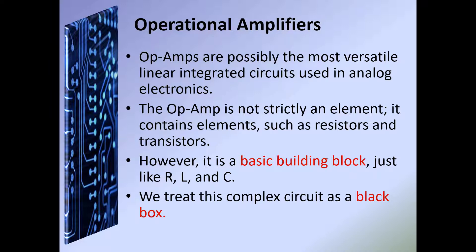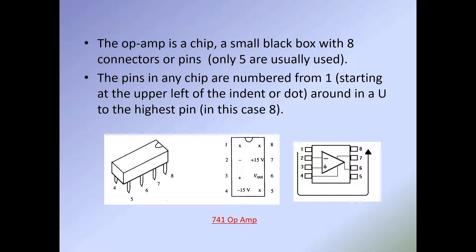Op amps are possibly the most versatile linear integrated circuits used in analog electronics. The op amp is not strictly an element — it contains elements such as resistors and transistors — but it is a basic building block, just like a resistor, inductor, or capacitor. We treat this complex circuit as a black box. The op amp is a chip, a small black box with eight connectors or pins, of which usually only five are used, and we'll talk about that later.